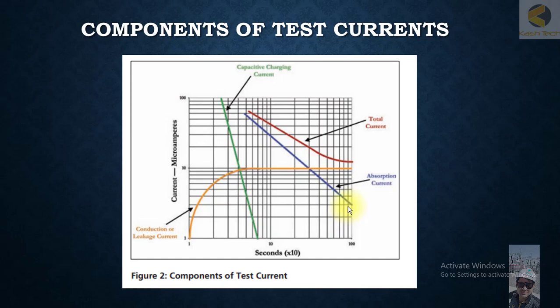This is the capacitive charging current. After five time constants, it's approaching a very low value, almost near to zero. You can see when the leakage current at the start is high, the reading of megaohms is low.